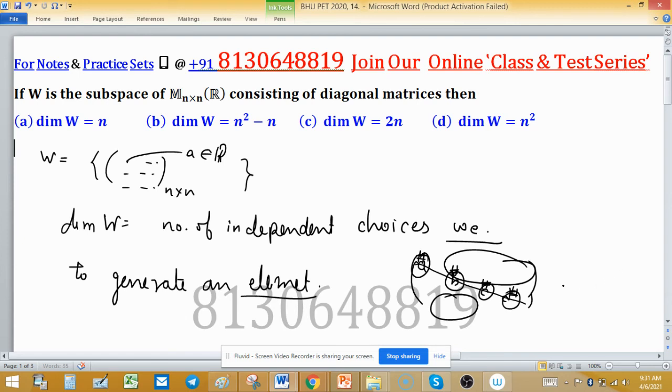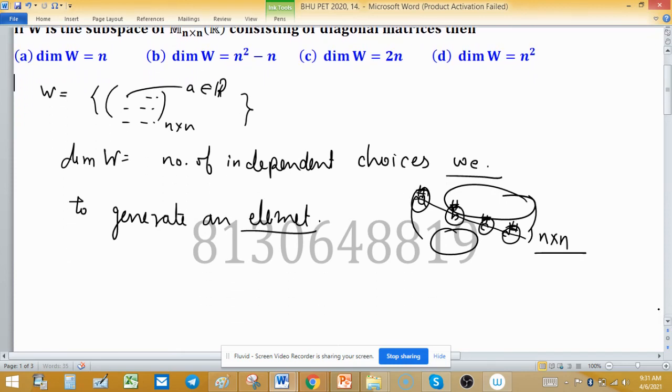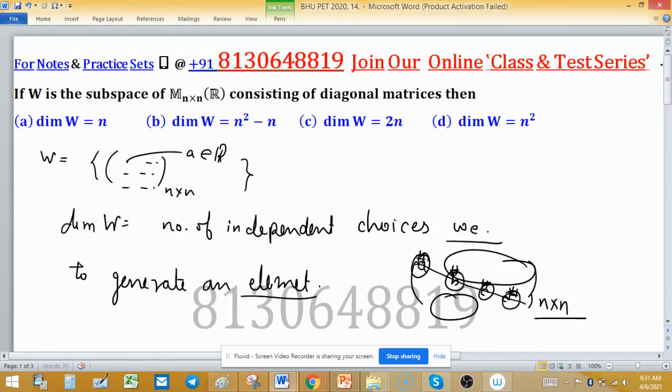So how many? Because the size of the matrices is n×n, we have n independent choices. Therefore, dimension of W is n. If you have studied linear algebra in earlier classes, then you can directly determine the answer. So option A is correct.